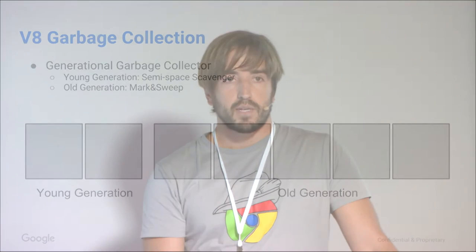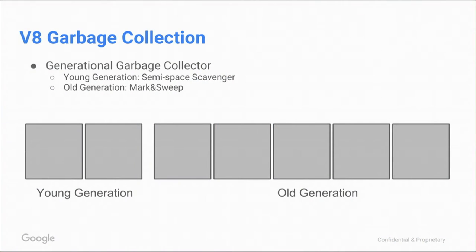What's the semi-space scavenger? The young generation is split into two spaces, one of which is basically unused. When we allocate in the young generation, it's really fast — basically just incrementing a pointer. Objects get allocated from the bottom to the top. When we reach the top of the semi-space — the end — this is where the young generation collection kicks in, and no more allocation can happen.